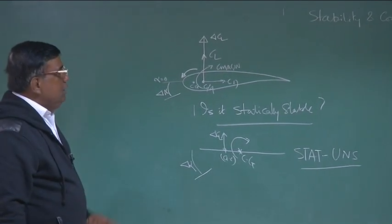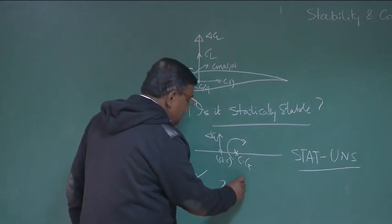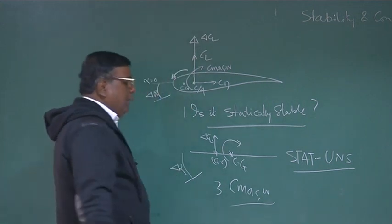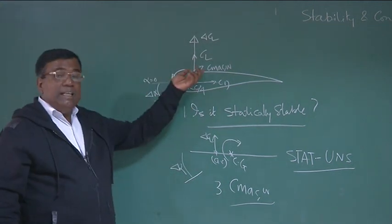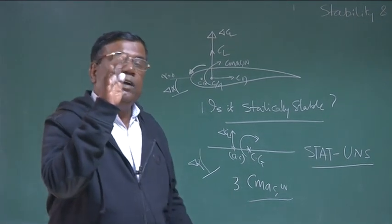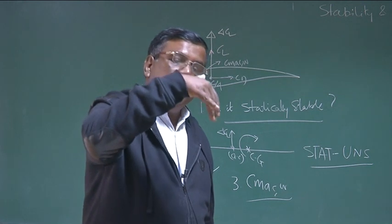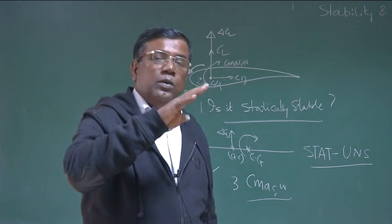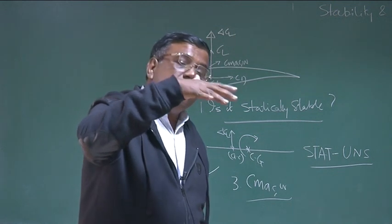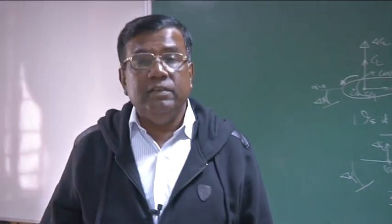Now let us see what CMAC will be doing. CMAC wing being negative for a cambered aerofoil means if I throw the wing, CMAC negative will always try to give a constant negative moment — it is not proportional to angle of attack, it is a constant negative moment. So the airplane or wing will have a tendency to pitch nose down constantly, making it very difficult to trim, even if it is statically stable.